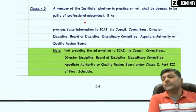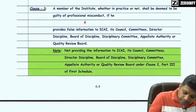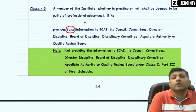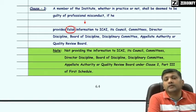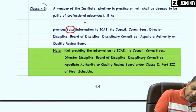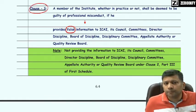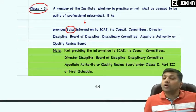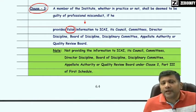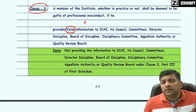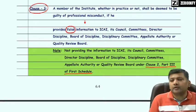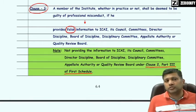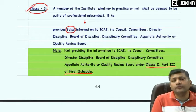Clause 3: A member of the institute shall be deemed to be guilty of professional misconduct if he provides false information to ICAI, its Regional Council Committee, Board of Discipline, Disciplinary Director, Disciplinary Committee, Quality Review Board, or Appellate Authority. However, if information required by the institute is simply not provided, the member will be guilty under Clause 2, Part 3 of First Schedule. Providing false information is covered in Clause 3, Part 2 of Second Schedule.